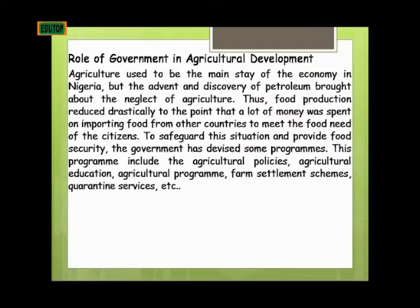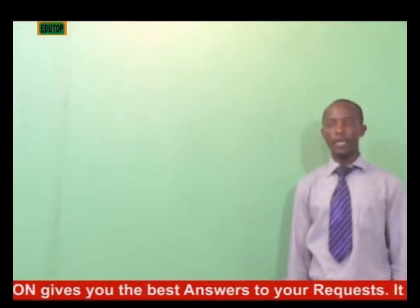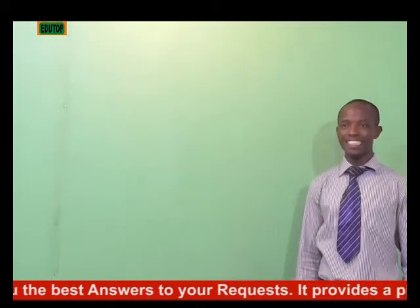Now we will look at the role of government in agricultural development. Agriculture used to be the mainstay of the economy in Nigeria, but the advent and discovery of petroleum brought about the neglect of agriculture. As a result, food production reduced drastically to the point that a lot of money was spent on importing food from other countries to meet the food needs of citizens. When Nigeria experienced the oil boom, agriculture was being neglected.